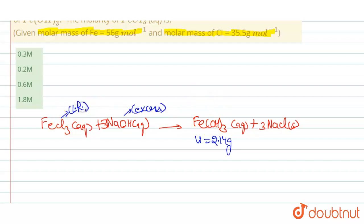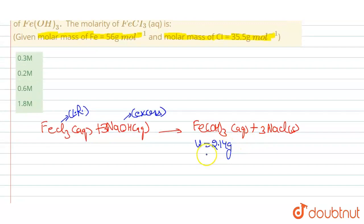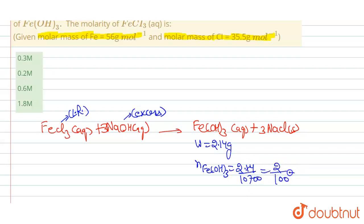Now we find the moles of Fe(OH)₃. Moles = mass / molar mass = 2.14 / 107, which comes to 2/100, that is 1/50 moles.